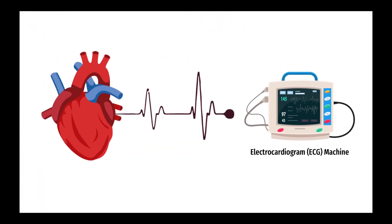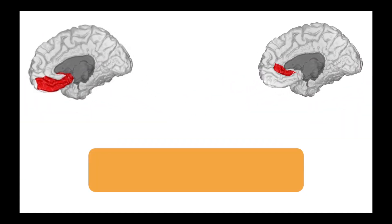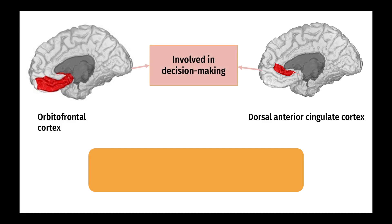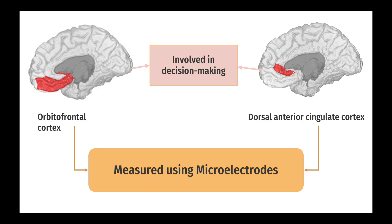Heart rate was used to measure bodily arousal and was tracked using an electrocardiogram. Moreover, it has been known that two important brain centers, known as the orbitofrontal cortex and dorsal anterior cingulate cortex, are associated with decision-making. Thus, the neural activity of these centers were measured using single-cell recordings with microelectrodes.